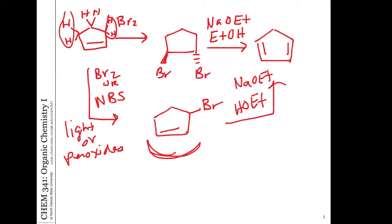Conjugated dienes: preparation of dienes. We could also eliminate under E1 elimination with acid-catalyzed dehydration of alcohols. But I think the most important reaction that we talked about in Chapter 10 is the Diels-Alder cycloaddition. And that's a pretty complicated reaction — there are a lot of details that are important. So let's take a look.